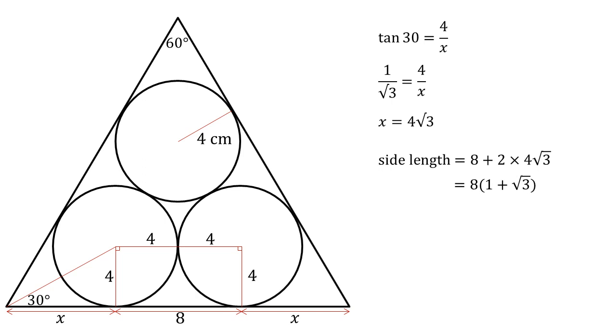We want the perimeter of the triangle, so we just need three times this because it's an equilateral triangle. So the perimeter of our triangle is three lots of eight times one plus root three, which is 24 times one plus root three, or as a decimal, 65.57 centimeters to two decimal places.